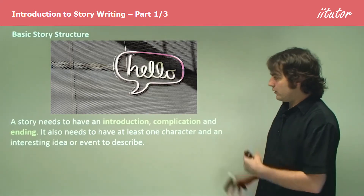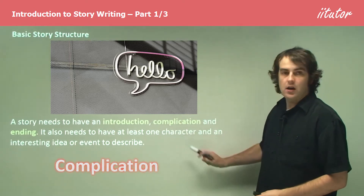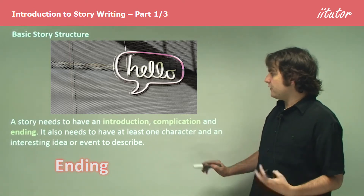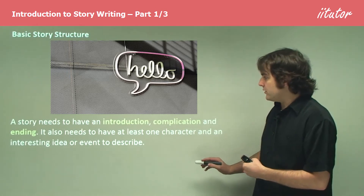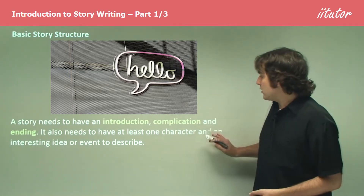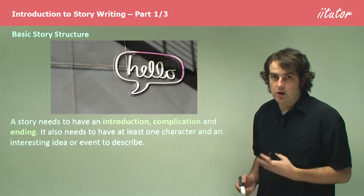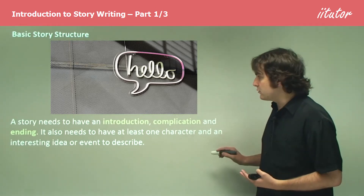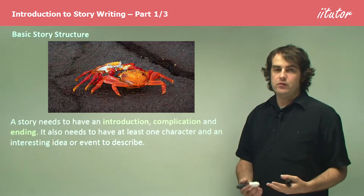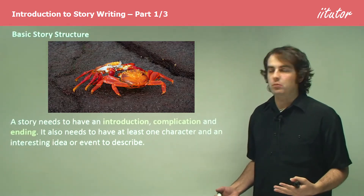Let's look at the three things that need to be present: an introduction, a complication, and an ending. The introduction is where you start your story. A complication is where the problem in the story happens. And the ending is where it all gets wrapped up, everything gets solved, and everything goes back to somewhat normal.